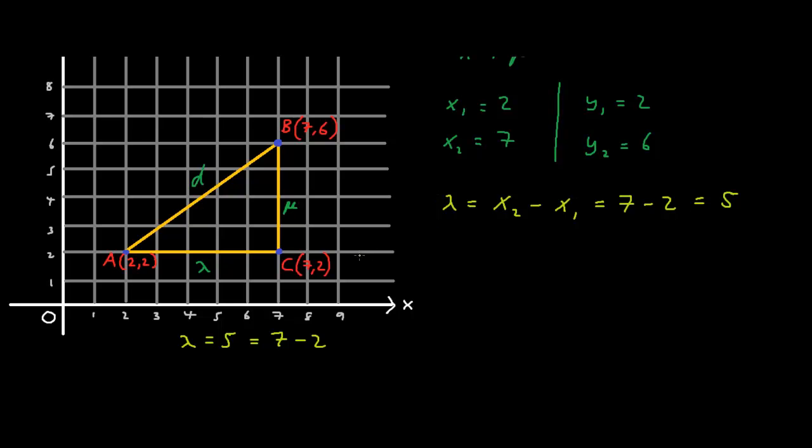We can use a similar method to find the length of mu. This length starts at y equals 2 and ends at y equals 6. So just by looking at this diagram we know that mu equals 6 minus 2 which equals 4. Using this information we can write that mu equals y2 minus y1 which equals 6 minus 2 which equals 4.